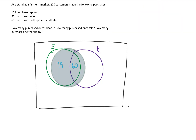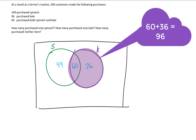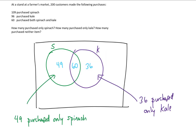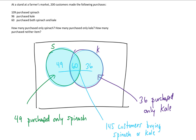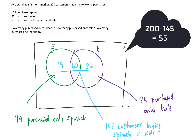As for kale, 96 customers purchased it, and we already have 60 in the overlap, so 96 minus 60 leaves 36 customers who only purchased kale. In total, 49 plus 60 plus 36 gives us 145 customers buying spinach or kale or both. Since 200 customers came through, that leaves 200 minus 145, or 55 customers who didn't purchase spinach or kale.